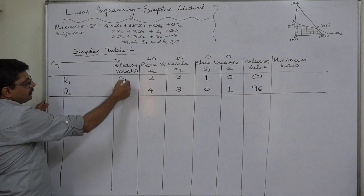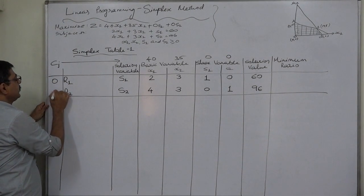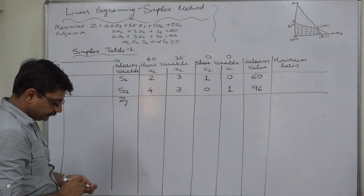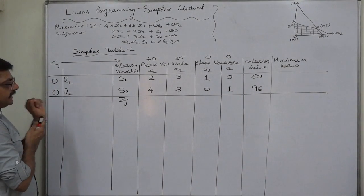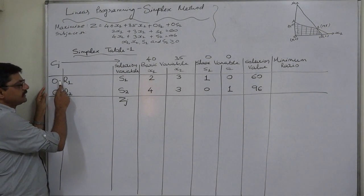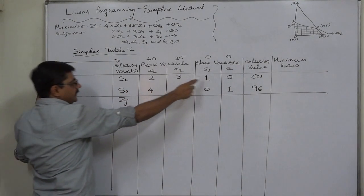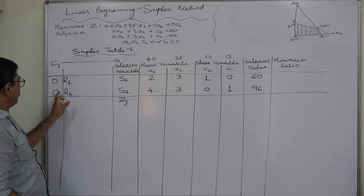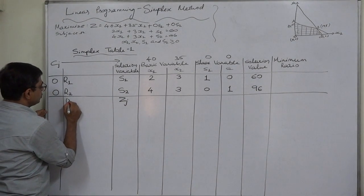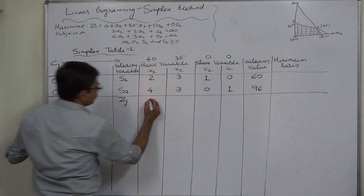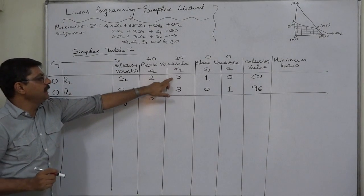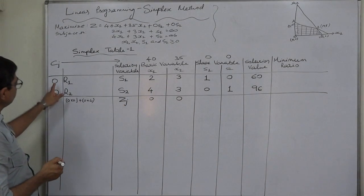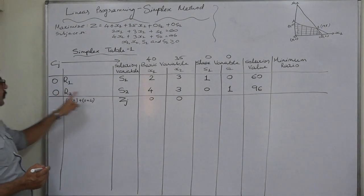Since the solution variables are S1 and S2, their coefficients — both 0 — are placed in the CB column. Now for the ZJ row: it is the sum of products. Each CB coefficient is multiplied with each coefficient in the same row, then the results are added. So ZJ for X1 is 0×2 plus 0×4 equals 0. For X2: 0×3 plus 0×3 equals 0. All ZJ values come out to 0 because both CB values are 0.